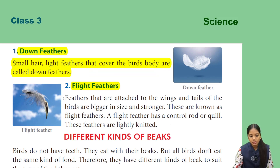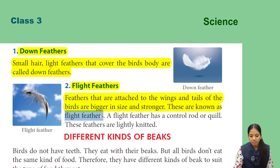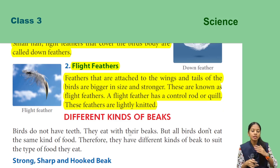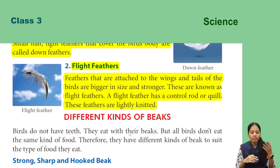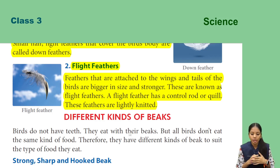Next are flight feathers. Feathers that are attached to the wings and tails of the bird are bigger in size and stronger — these are known as flight feathers. A flight feather has a central rod called a quill, and these feathers are tightly knitted.